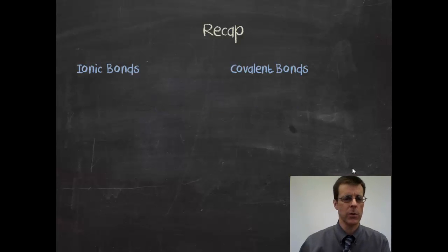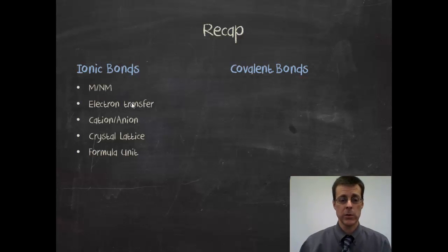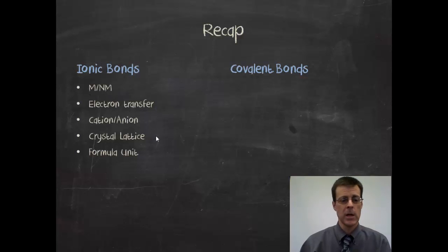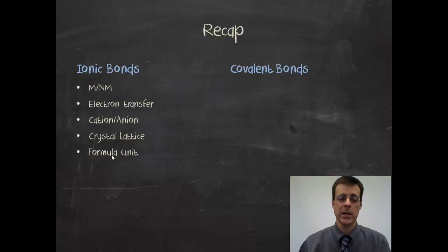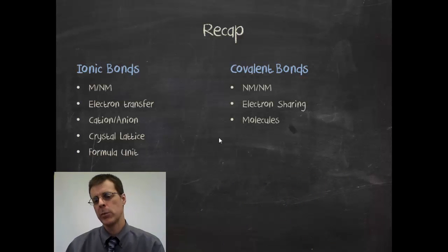Let's remind ourselves what we already know about bonds. Ionic bonds form between a metal and a nonmetal — there's an electron transfer where the metal loses and the nonmetal gains. They form a cation for the metal and an anion for the nonmetal, and they come together in a solid structure called a crystal lattice. The chemical formula is called a formula unit, not really a molecule, though calling it a molecule isn't technically correct.